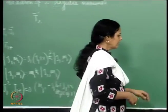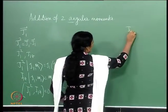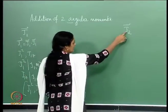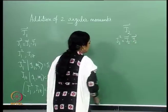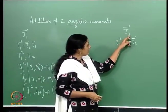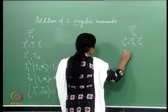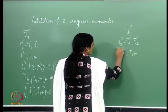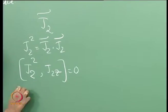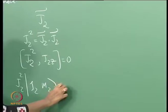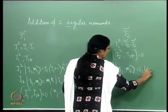Similarly, I have the second system. j2 squared equals j2 dot j2. We have already seen that j2 as well as j1 are vectors under rotations. Once more, j2 squared and j2z are operators which simultaneously commute with each other for system 2, and there is a complete set of common eigenstates of j2 squared and j2z, with the corresponding eigenvalue equation.